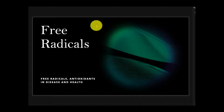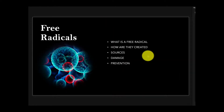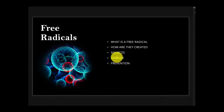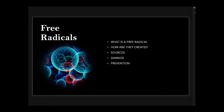So this is essentially what we're going to go over: what is a free radical, how are they created, sources, the type of damage they do, and the prevention. One of the most important mechanisms in cellular injury is injury induced by free radicals, especially reactive oxidative species.